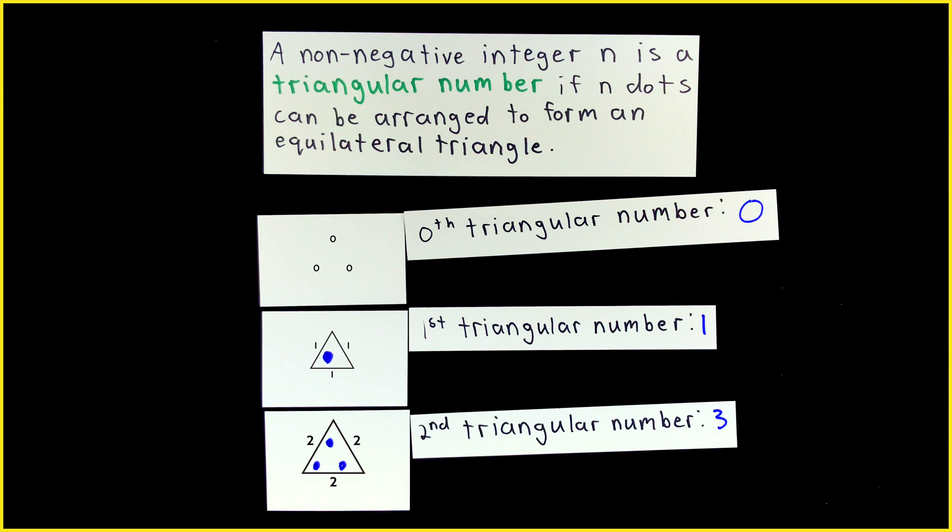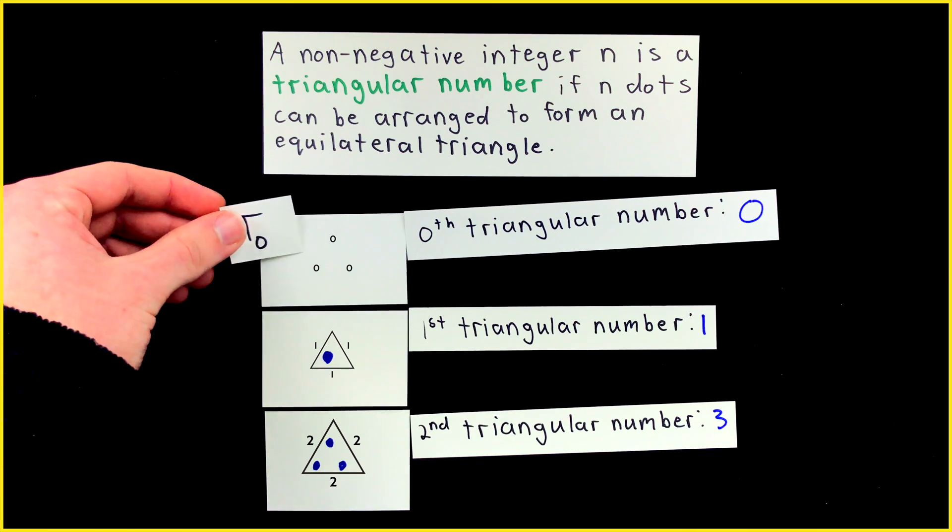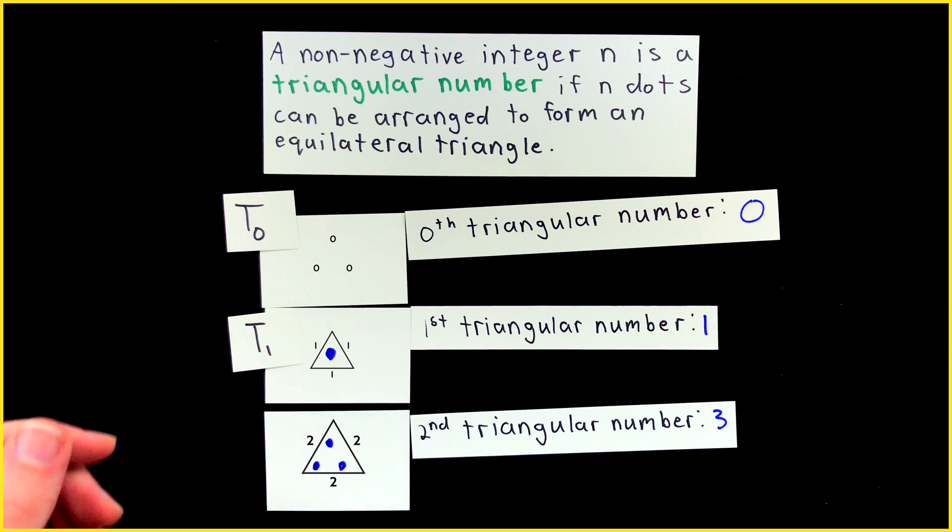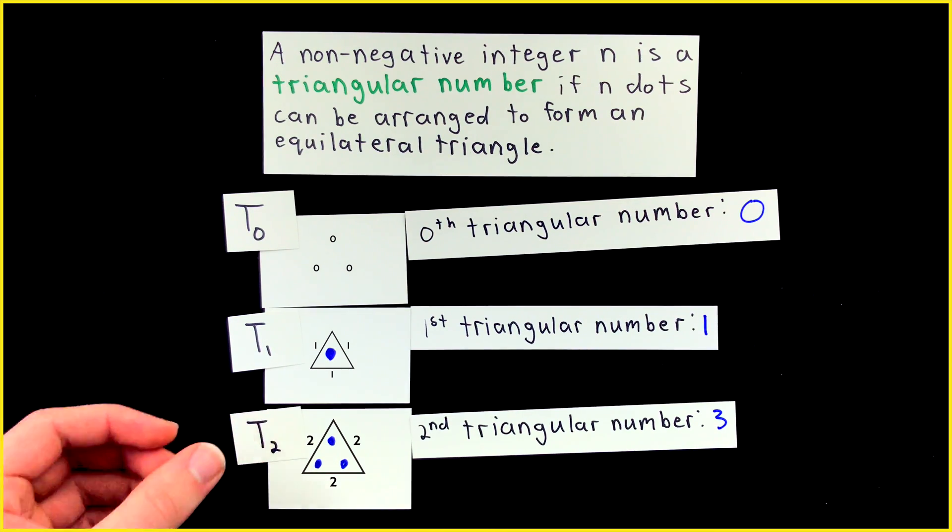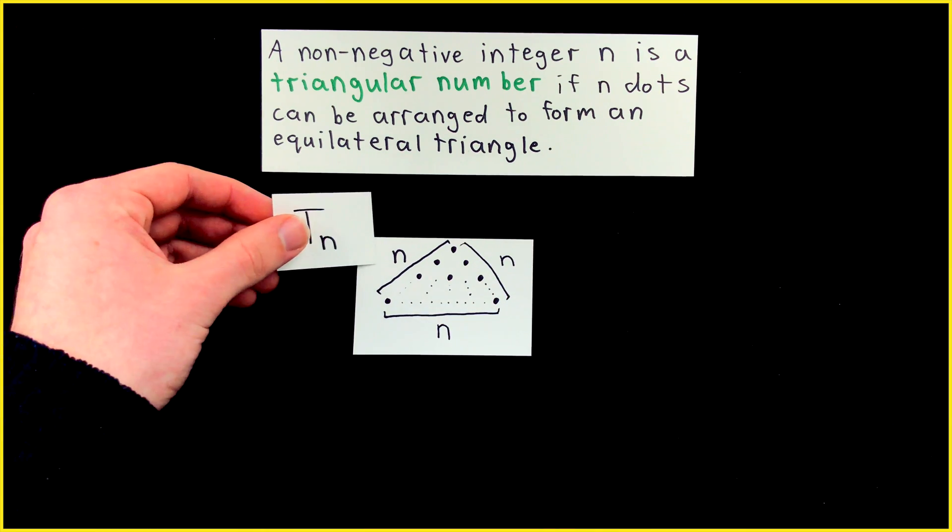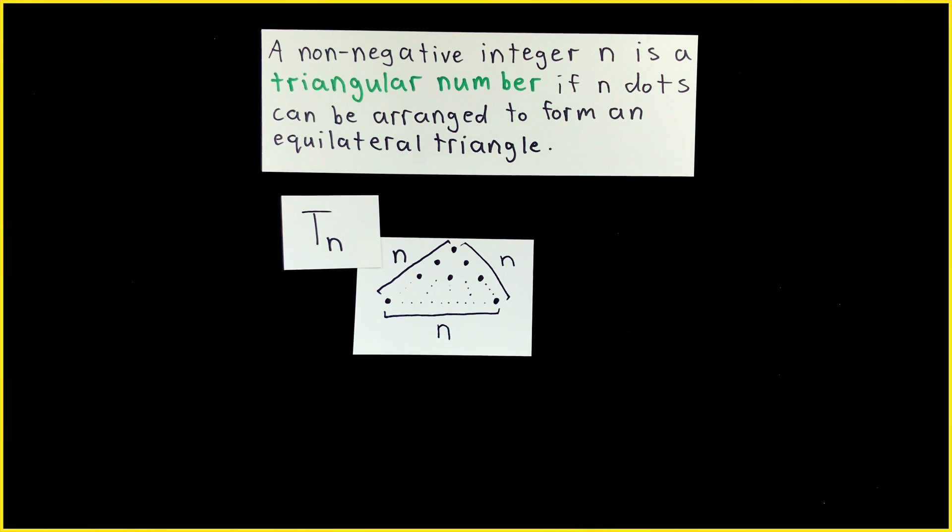We can use simple names to refer to the triangular numbers, even if we don't know what a particular number is. We call zero the zeroth triangular number T0. One, the first triangular number, is T1. Three, the second triangular number, is T2, and so on. Tn is the nth triangular number, the number of dots needed to fill an equilateral triangle with side length n.